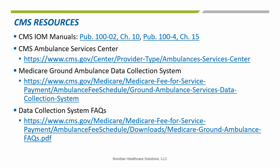The CMS internet-only manuals are the rules and regulations that govern the Medicare program, found at cms.gov/manuals, with a couple of those publications listed here. The CMS Ambulance Service Center webpage has information on fee schedules, articles, open door forums, and more. The Medicare Ground Ambulance Data Collection System has a dedicated ambulance page for those providers who have been selected. Effective January 1 and continuing through 2024, ground ambulance providers and suppliers selected to participate in the Medicare Ground Ambulance Data Collection System must collect information on cost, utilization, revenue, and other service characteristics in accordance with the Medicare Ground Ambulance Data Collection Instrument for a continuous 12-month period.